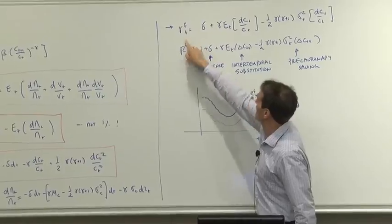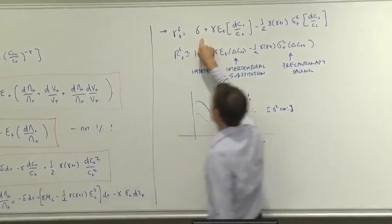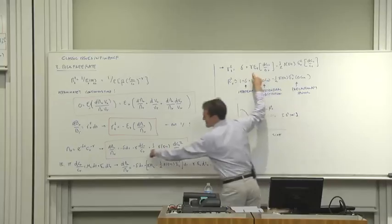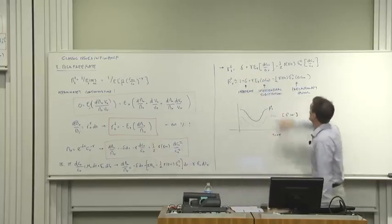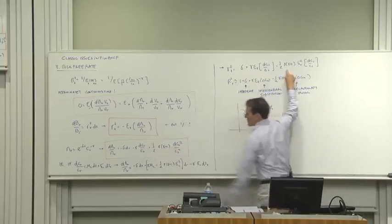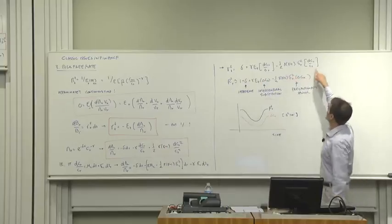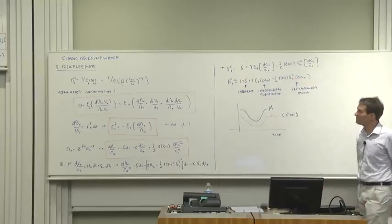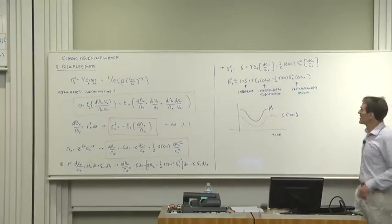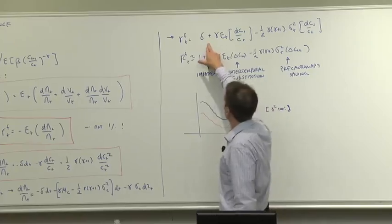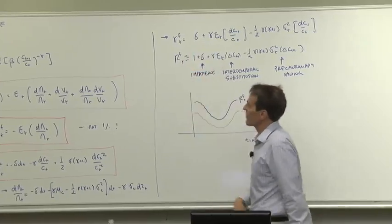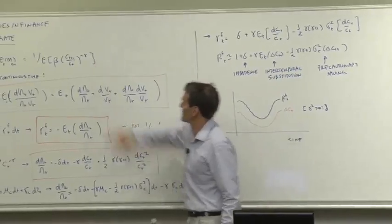The risk-free rate is delta, that's that term, plus gamma expected growth in consumption, minus 1 half gamma gamma plus 1 times the variance of consumption growth. That's the continuous time version. Now we can just read from that the discrete time approximation.